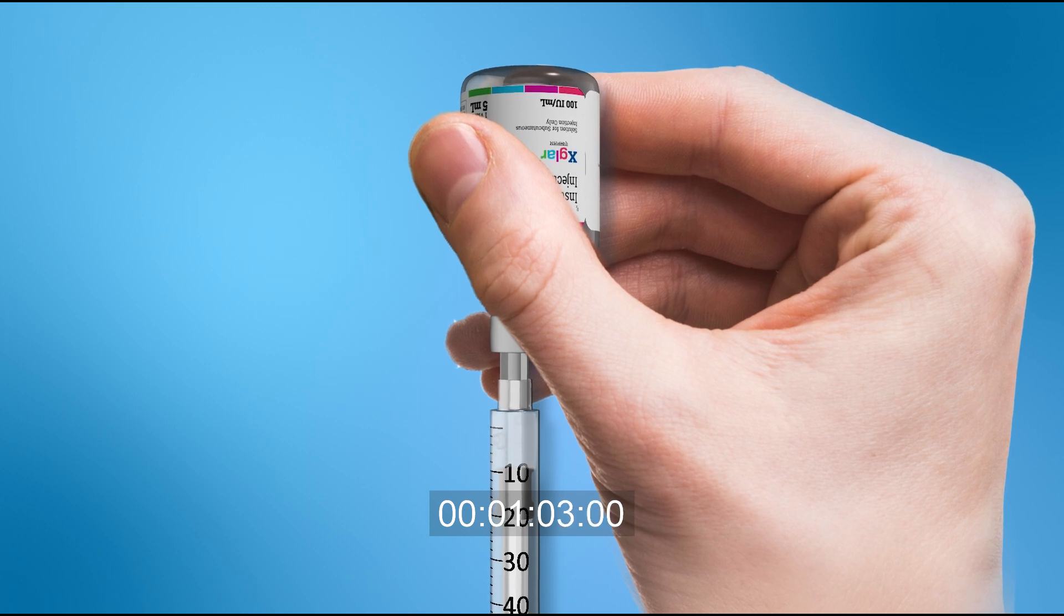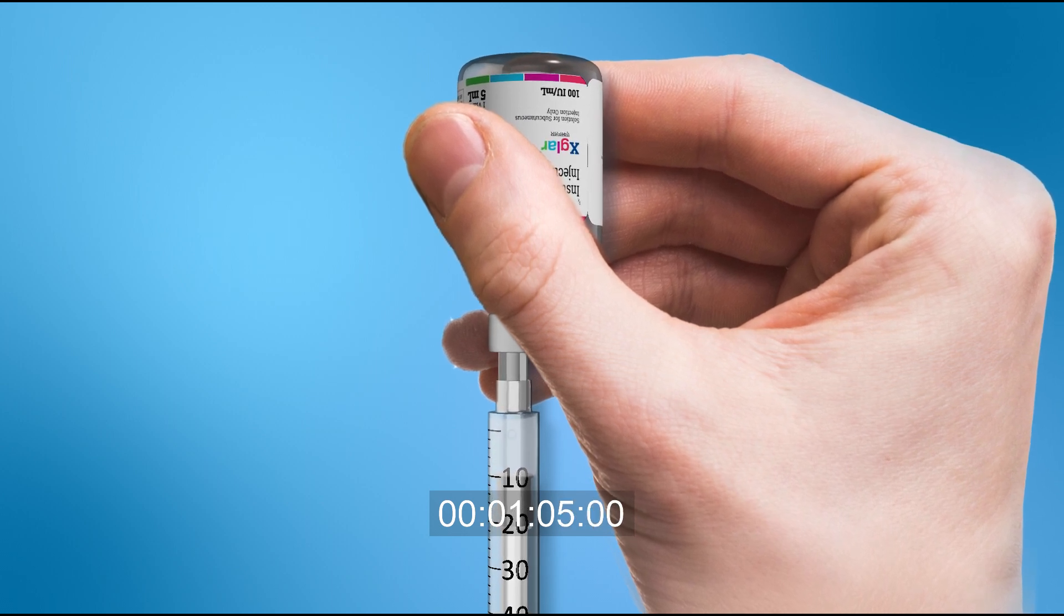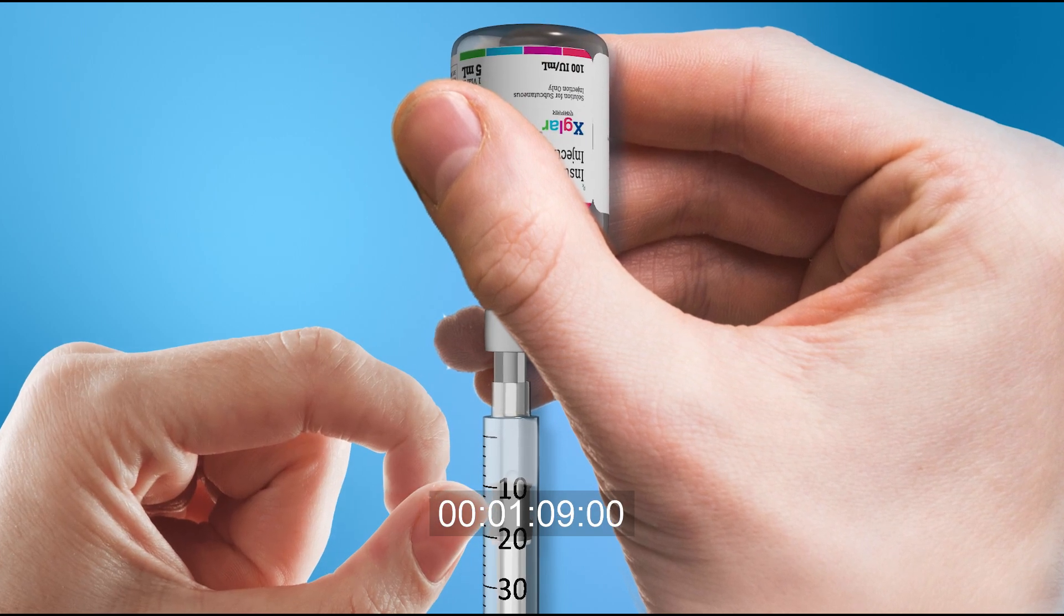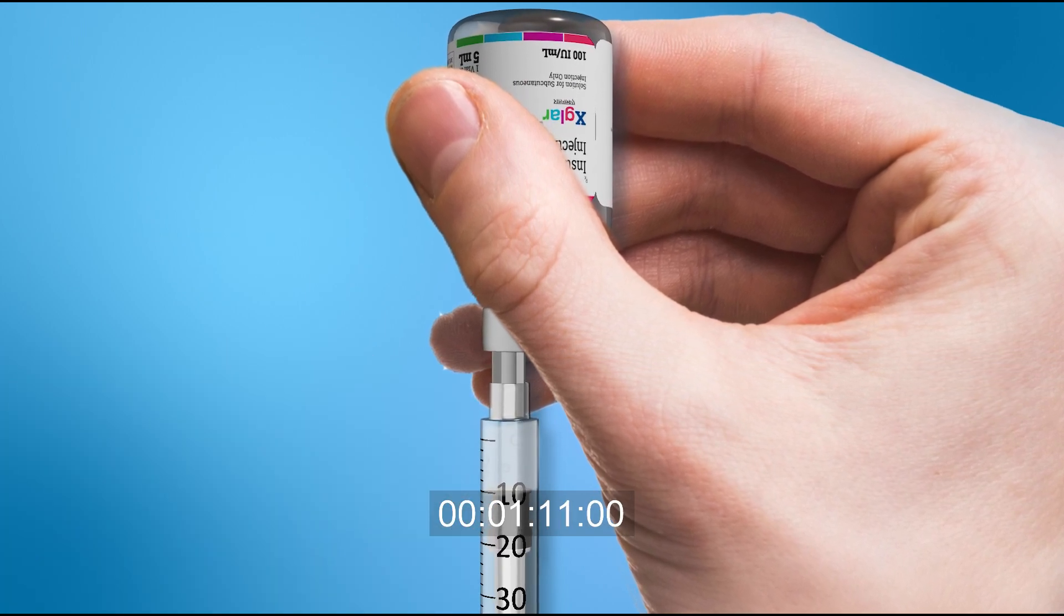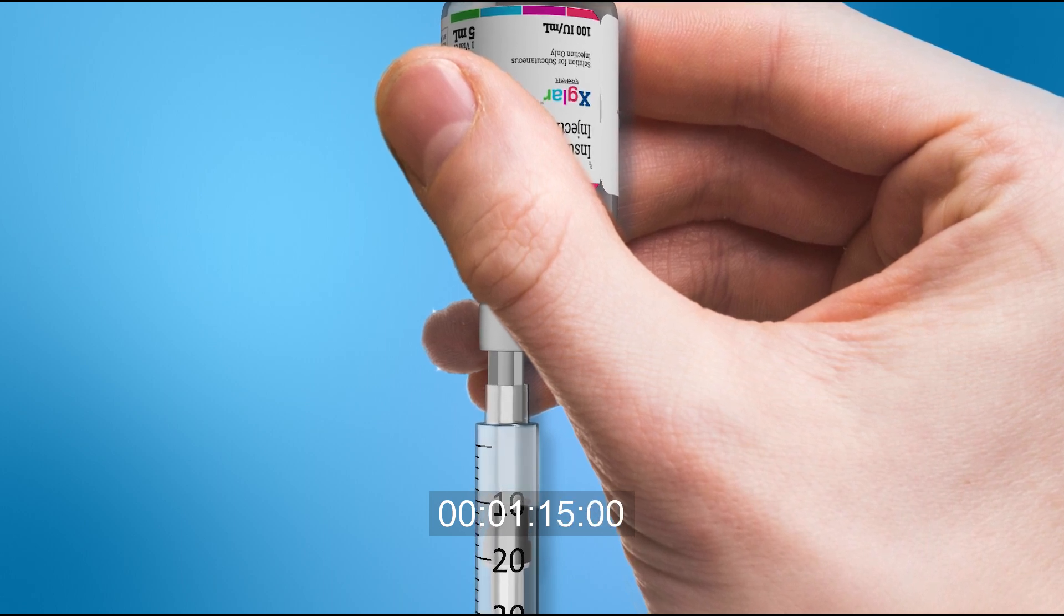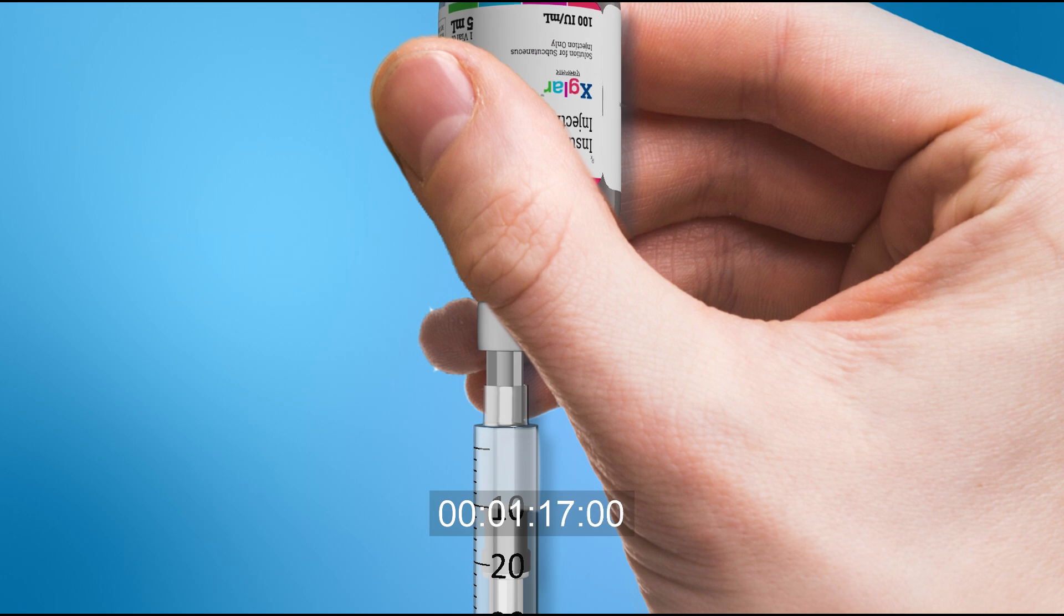Check the syringe for air bubbles. If bubbles are present, hold the syringe straight up and tap the side until the bubbles float to the top. Push any bubbles out and be sure to correct the number of units in your syringe.